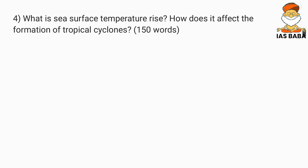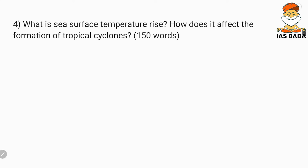Let us proceed with the very first question. The question is: what is sea surface temperature rise? On a similar line, there was a question in a previous prelims wherein UPSC had asked about OMT — ocean mean temperature. Basically, OMT and sea surface temperature SST are used for prediction of climatic phenomena like amount of precipitation. In this context, it is related to tropical cyclones — how does SST rise affect the formation of tropical cyclones.